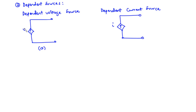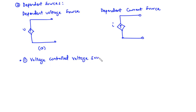Now, since dependent sources are either voltage or current and they are controlled by another voltage or current, we are going to obtain four different configurations. The first one is a voltage-controlled voltage source — the first voltage controls the second voltage source. This is called VCVS. The second is a voltage-controlled current source, and that is VCCS.